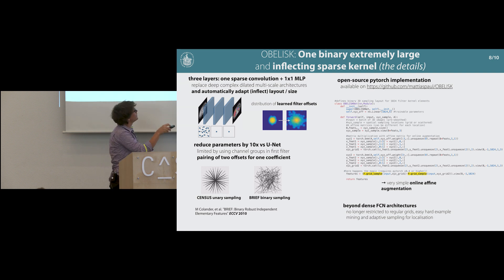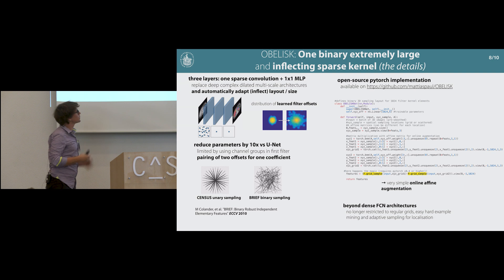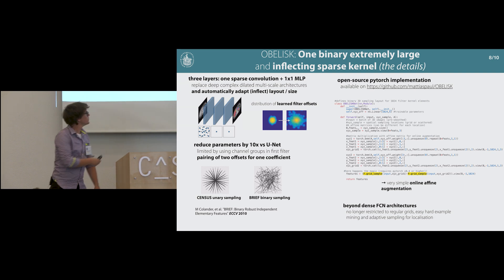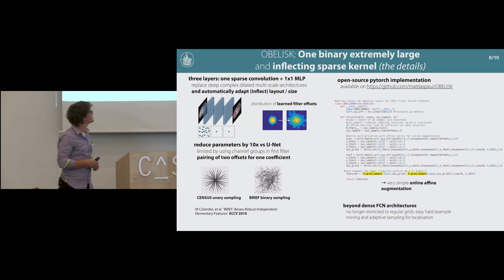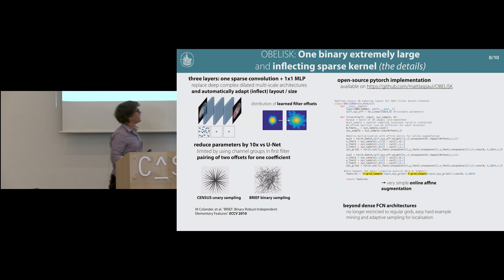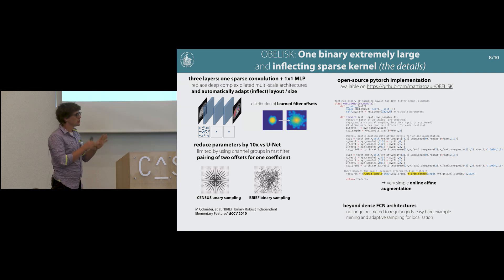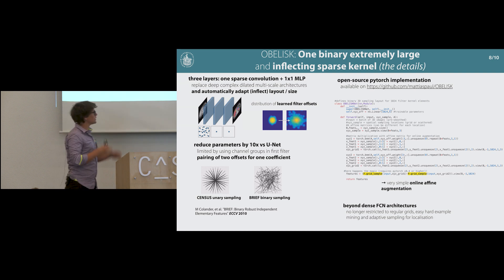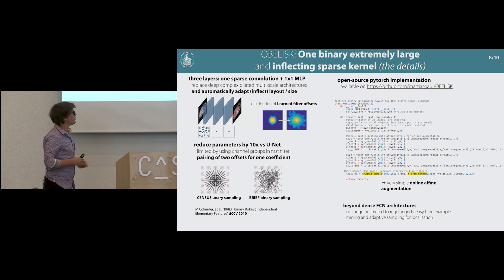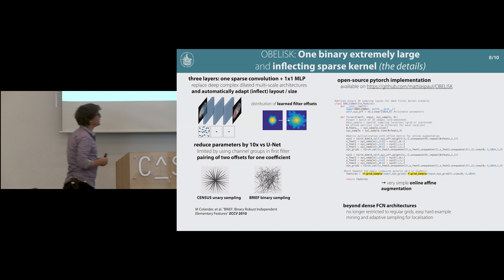The implementation is available open source on my GitHub in PyTorch, and it's actually quite simple. The key step uses the grid sample function for differentiable image sampling. By using this, we can also implement very simple online affine augmentation as a matrix multiplication with our offset layout. We can also move away from dense FCN architecture by operating on a randomly sampled pixel grid, which reduces memory demand and enables easy hard example mining, which helps convergence.